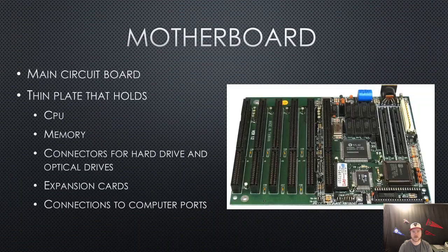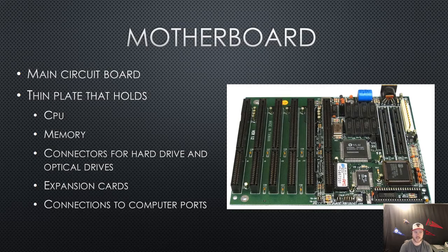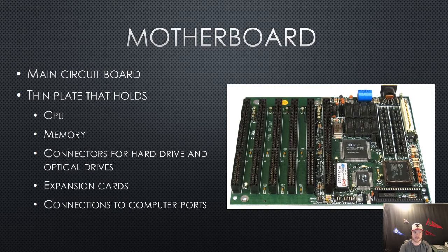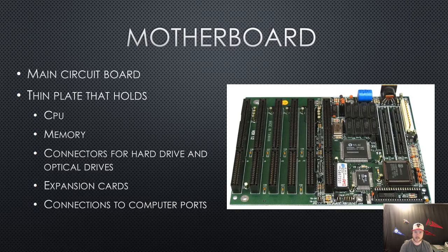The first thing that you're going to see inside of your computer case is what's called the motherboard. The motherboard is the main circuit board inside of your computer and it's basically a thin green plate. This plate contains the CPU, which is the central processing unit or your processor, the memory which is your RAM or random access memory, and also the connectors for the hard drive and the ports on your computer. So anything that you connect to on the outside connects on the inside to this motherboard.